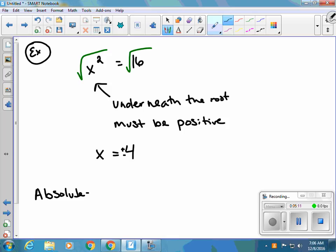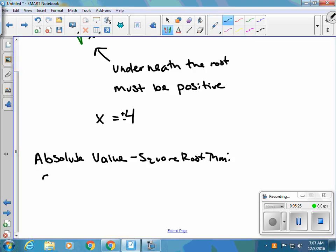That leads into our absolute value square root theorem: the square root of x squared is the absolute value of x. We just talked about that underneath the root must be a positive number. The other thing they're going to have you come back to is talking about rational and irrational numbers.